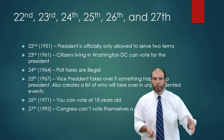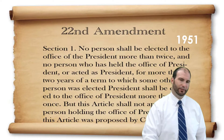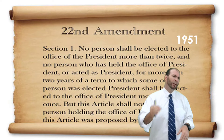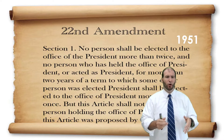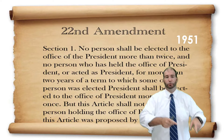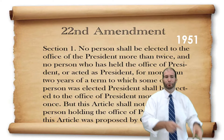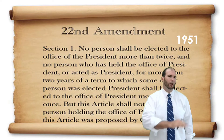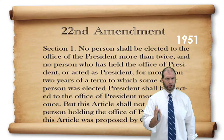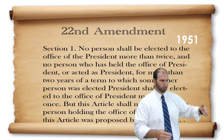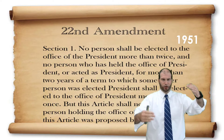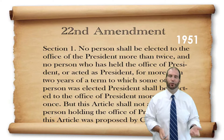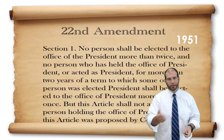The 22nd amendment, passed in 1951, says no person shall be elected to the office of the president more than twice. No person who has held the office of president for more than two years of a term to which someone else was elected shall be elected president more than once. Basically, presidents can only serve two terms.